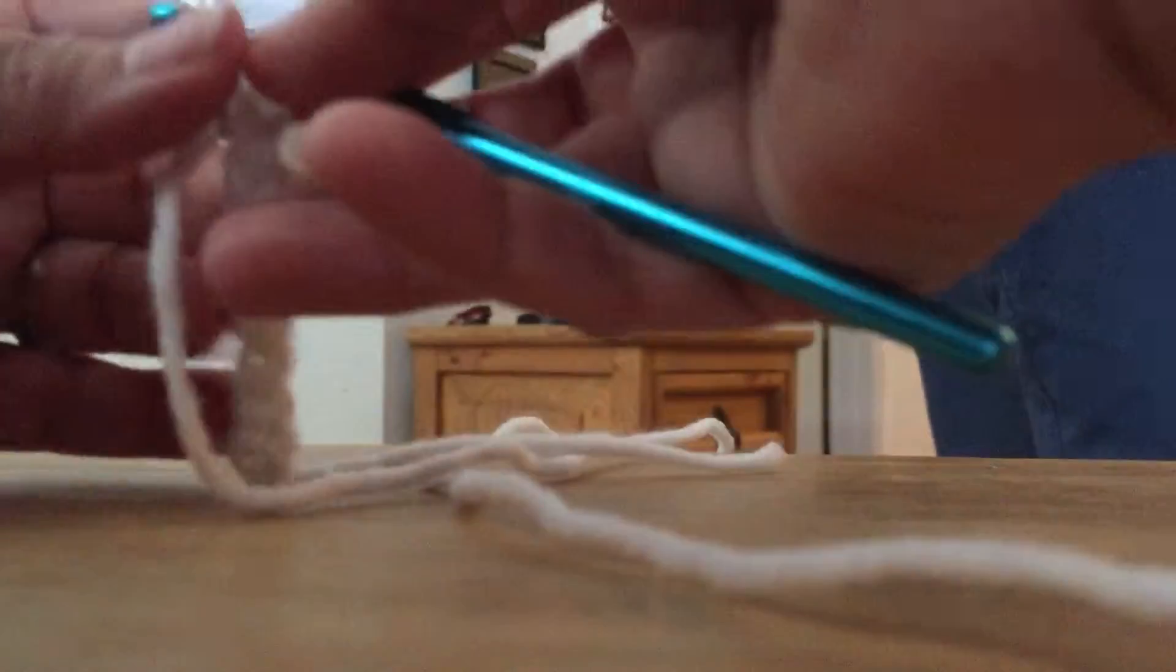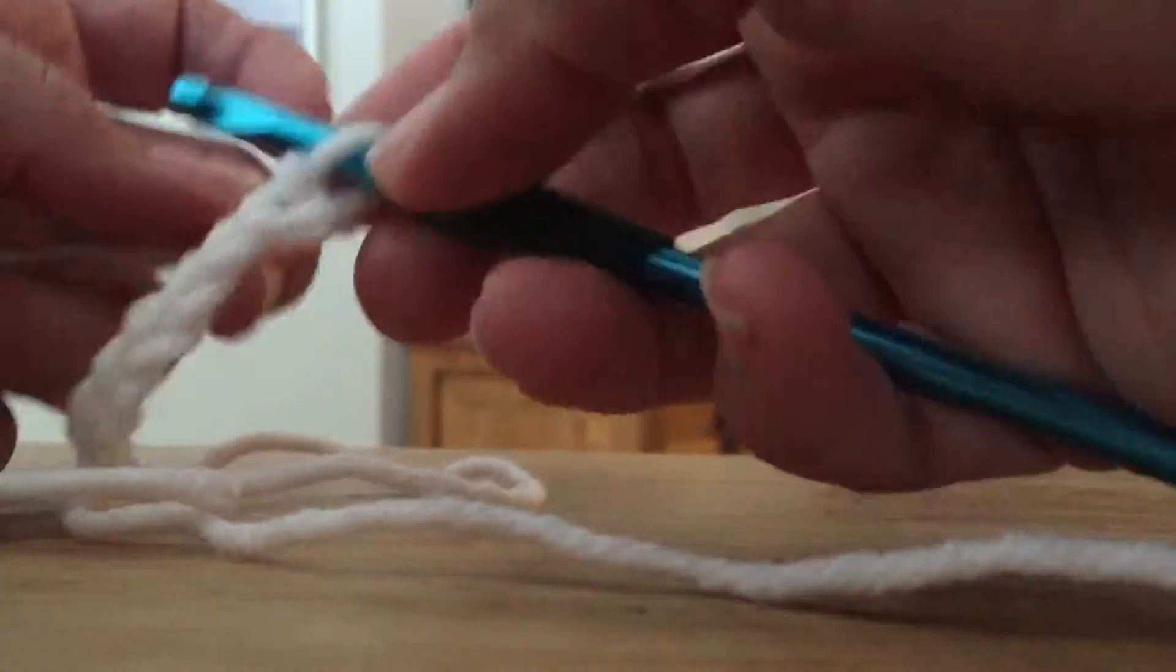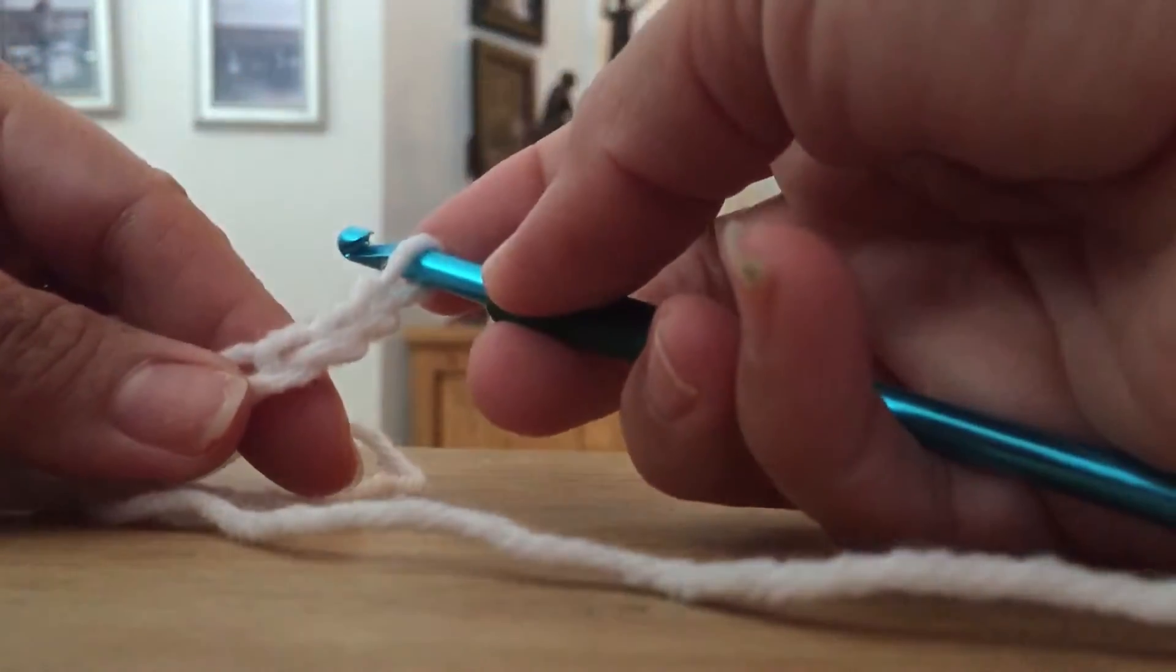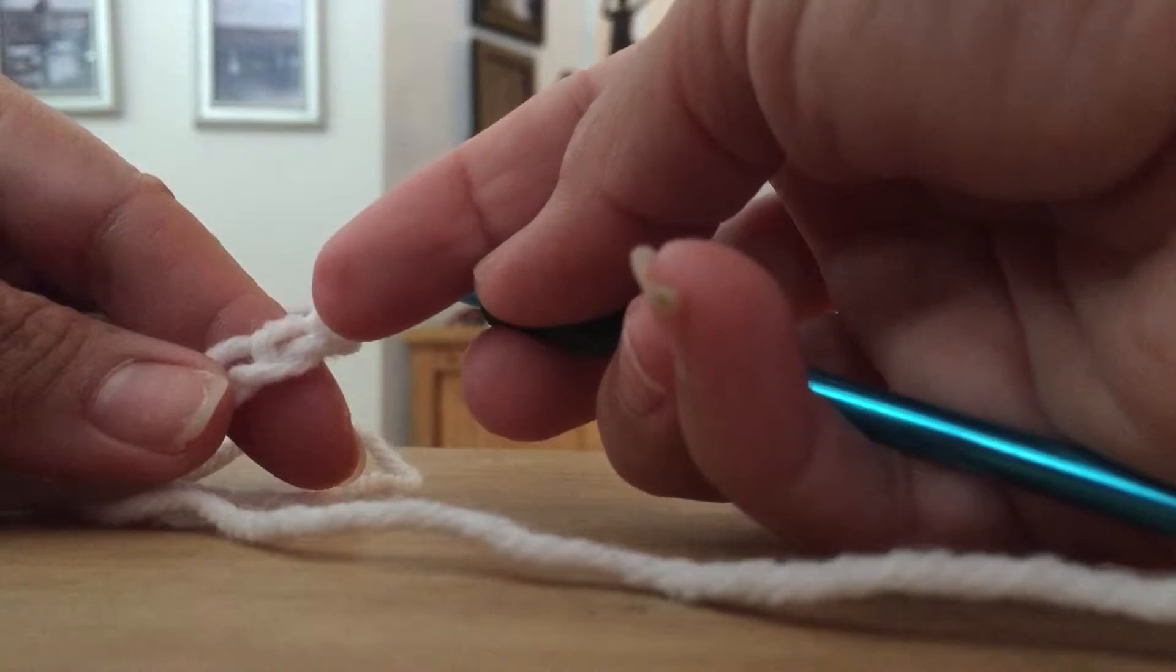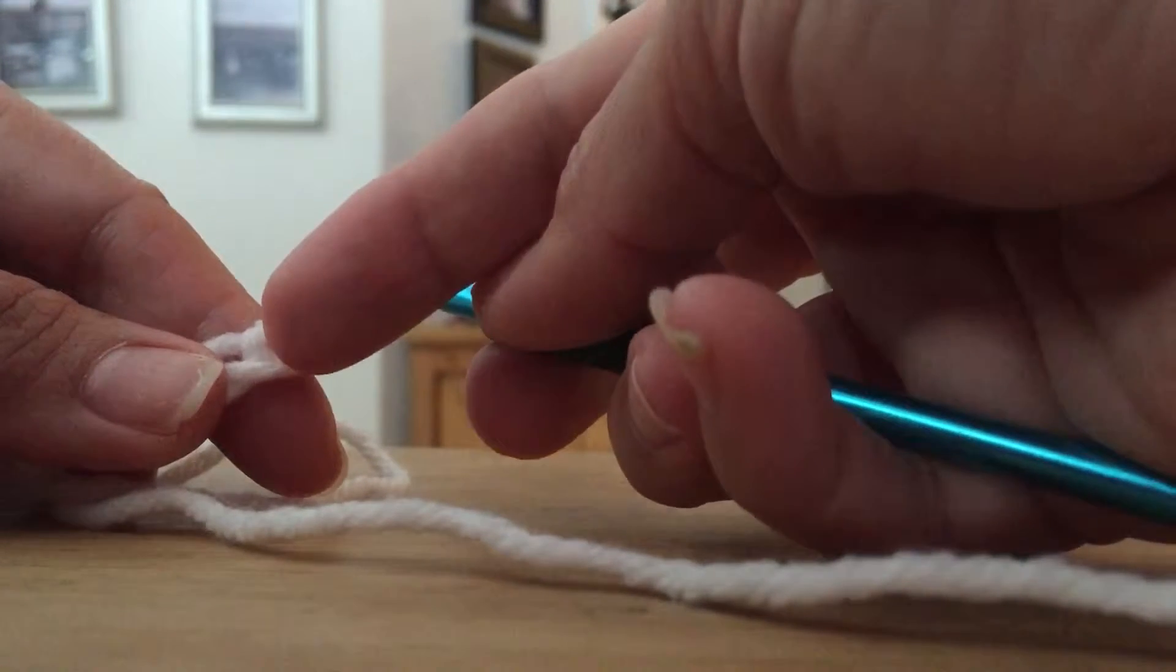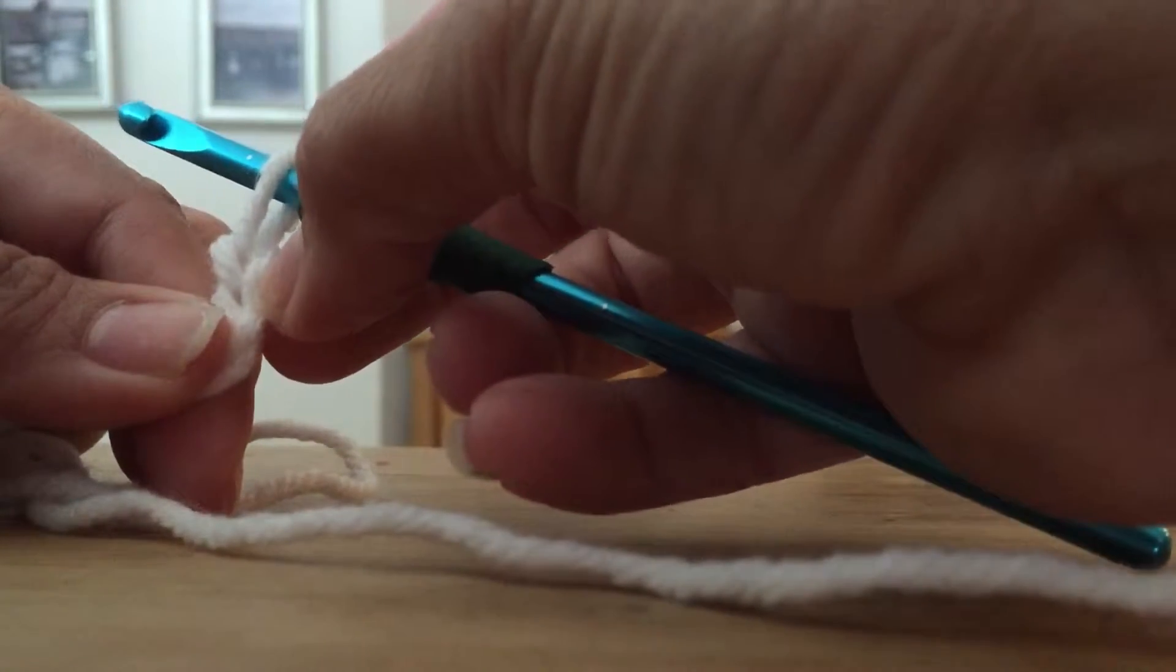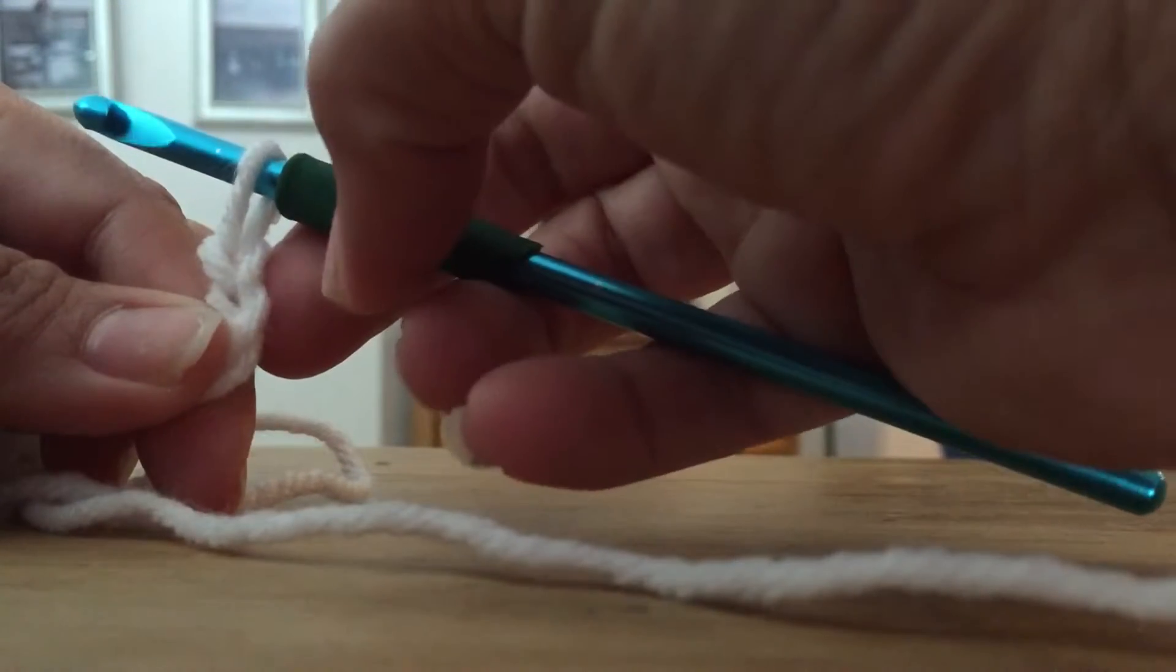So now because we're doing a double crochet we're gonna chain two at the end of that chain. One, two, and we're gonna skip these first two chains. One, two, and we're gonna start double crocheting in the third chain from the hook. This brings us, these two chains that we skipped bring you up to the next level of two high.